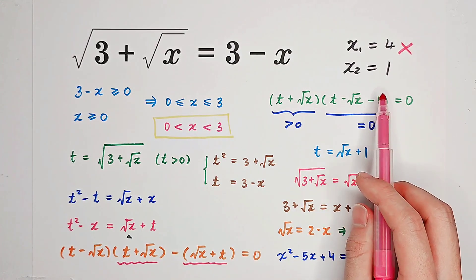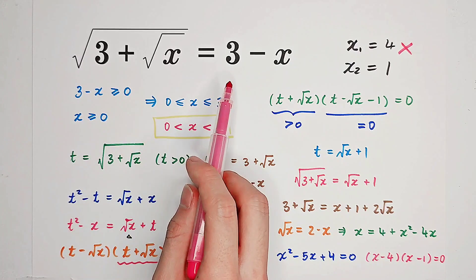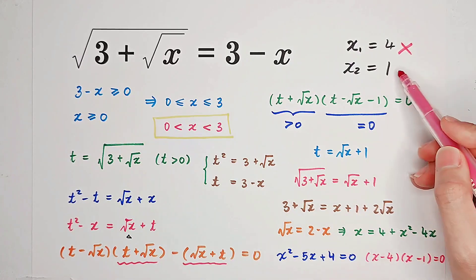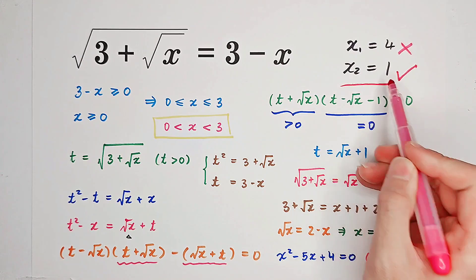What about x2 equals 1? 3 plus 1 is 4. Square root of 4 is 2 is equal to 3 minus 1, which is 2. So we have one solution to this equation. That is x equals 1.